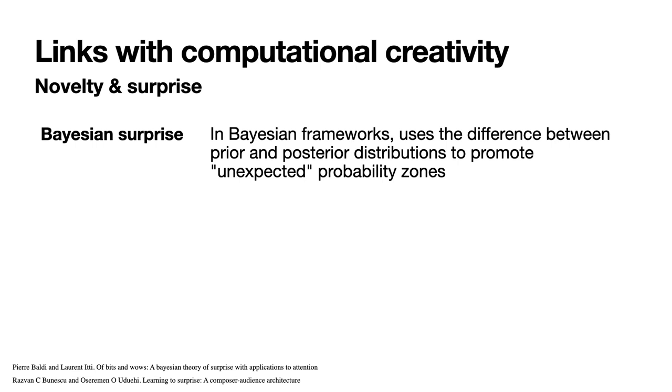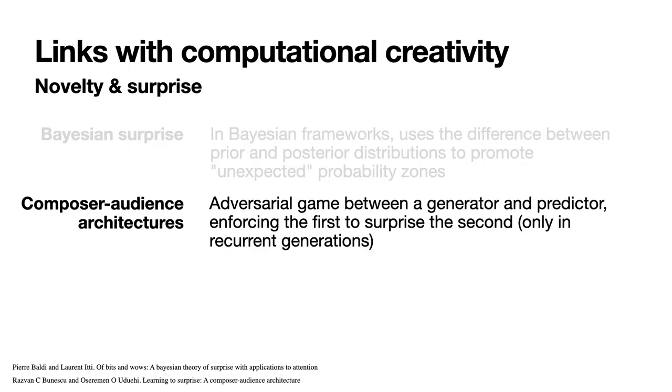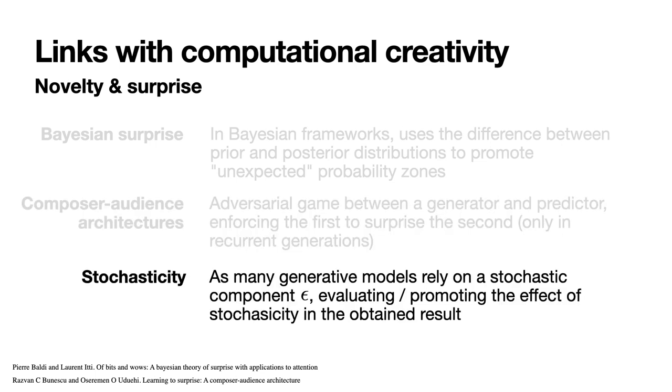The first, Bayesian surprise, uses the difference between prior and posterior distributions to promote unexpected probability zones in the generative model. In the second, Composer-Audience Architectures organize an adversarial game between a generator and a predictor, enforcing the first to surprise the second. Finally, as many generative models rely on a stochastic component epsilon, evaluating or promoting the effect of stochasticity in the obtained result may be a good way to monitor or have a hand on the amount of surprise of the generated outcomes.